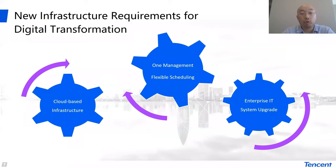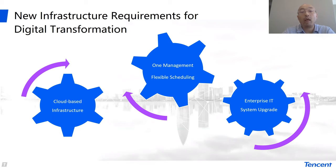If we talk about digital transformation, we identify three main requirements. First, in terms of infrastructure, we find infrastructure should be based on cloud — this is one of the major ideas — and maybe just one cloud, though in some scenarios we need several clouds.